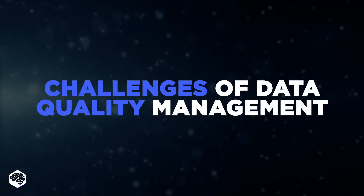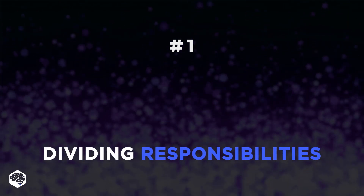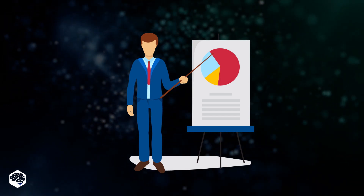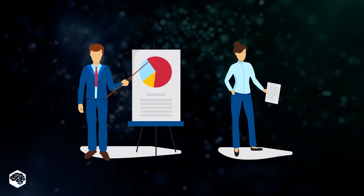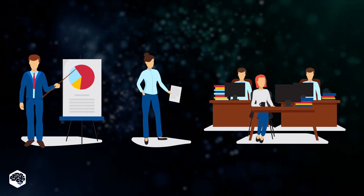What are the challenges of data quality management? The first challenge is dividing responsibilities for the process. You need to determine who is responsible for strategic activities — this person will define the objectives of the data quality management. The next step is dividing execution activities: you need people who will set smaller objectives, articulate tech challenges, and choose data analytics tools. Finally, you need a technical team that will organize and manage operations.